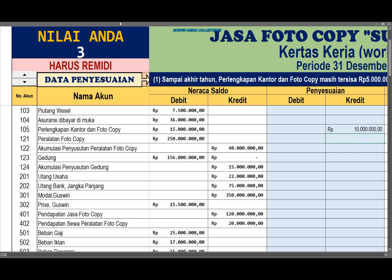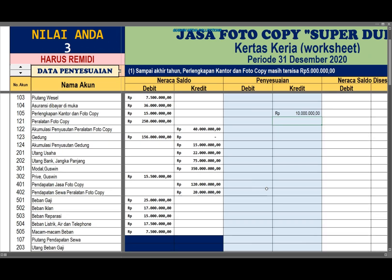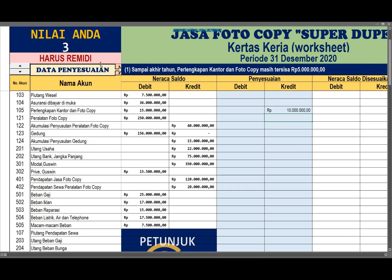Berapa poin setiap jawaban benar? Ini sistem yang menghitung. Ada yang 1, ada yang 2, ada yang 0. Ini harus sampai nilainya memenuhi syarat minimal 70. Kalau sudah 70 ke atas, maka background akan berubah menjadi tuntas, dan warnanya menjadi biru dan putih.